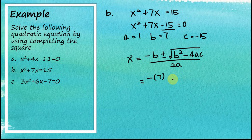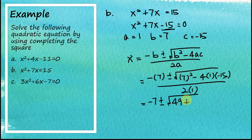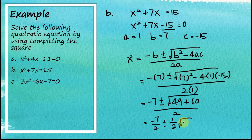Our b equals 7, so we get negative 7 plus or minus the square root of 7² minus 4 × a × c, where a = 1 and c = −15, divided by 2 × 1. So this equals negative 7 plus or minus the square root of 49 minus 4 × (−15). Negative 4 multiplied by negative 15 becomes positive 60. So we have 49 + 60 = 109, divided by 2. This gives x = negative 7 over 2, plus or minus one-half times the square root of 109, and this is the solution.